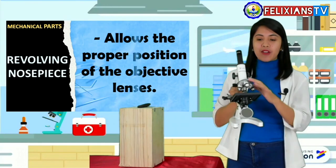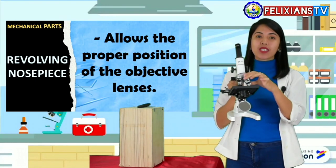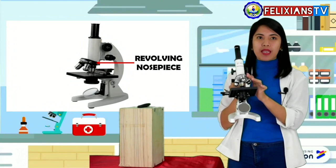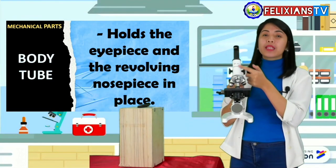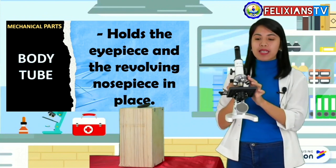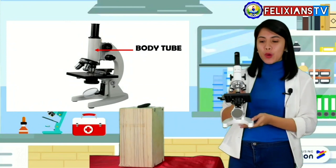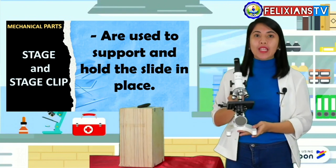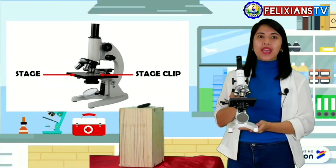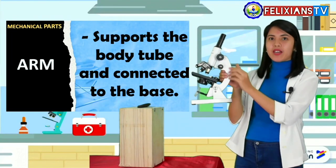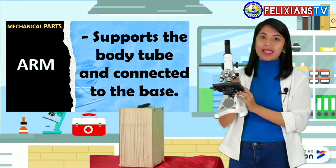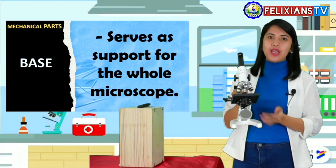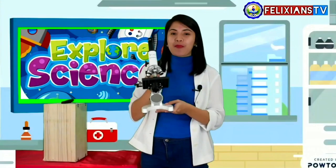The next one is the revolving nosepiece. The revolving nosepiece allows the proper positioning of the objective lenses. So, this is the revolving nosepiece. Next is the body tube. The body tube holds the eyepiece and the revolving nosepiece in place. Next, we have the stage and the stage clip. The stage and stage clip are used to support and hold the slide in place. Next, we have the arm. The arm supports the body tube that is connected to the base. And of course, the base serves as the whole support of the microscope. So, those are the parts and function of our compound light microscope.